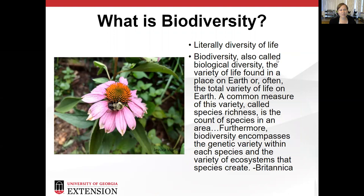So to start with, what is biodiversity? Biodiversity literally means the diversity of life, and it is defined as biological diversity — the variety of life found in a place on Earth, or often the total variety of life on Earth. We may be talking about this on a small scale, like in your landscape, or globally. A common measure of this variety is called species richness, which is a count of the species in an area. Furthermore, biodiversity encompasses the genetic variety within each species and the variety of ecosystems that species can create.